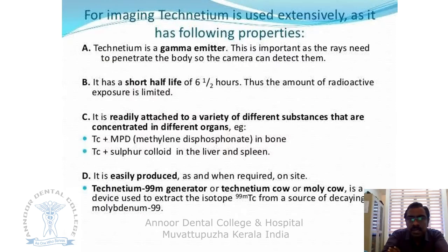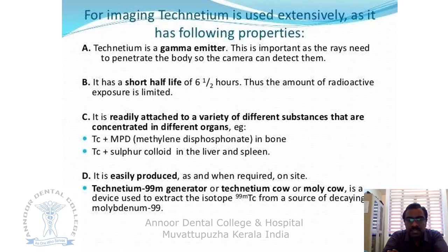Technetium-99 is the most extensively used radionuclide because it is a gamma emitter — important as the rays need to penetrate the body so cameras can detect them. It has a very short half-life of around six hours, limiting radioactive exposure. It readily attaches to a variety of substances concentrated in different organs — for example, Technetium plus methylene diphosphonate for bone, and Technetium plus sulfur colloid for liver and spleen. It is easily produced on-site using a Technetium-99 generator, which extracts Technetium-99m from decaying Molybdenum-99.